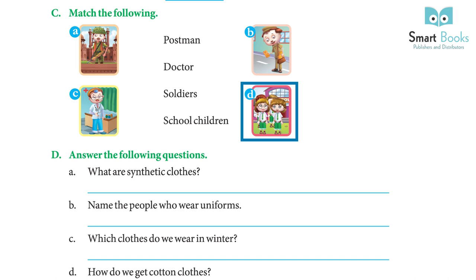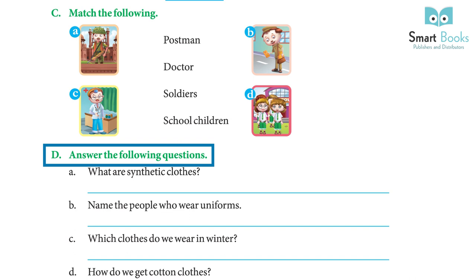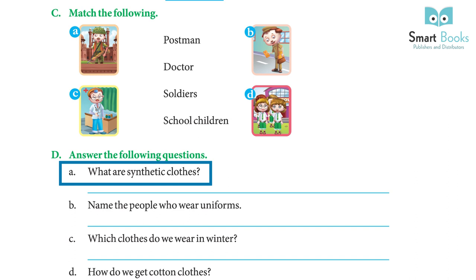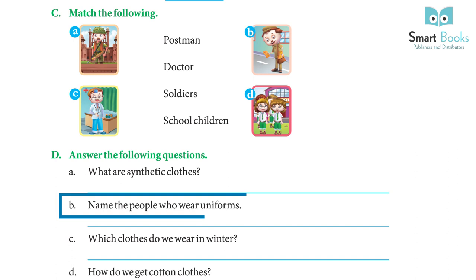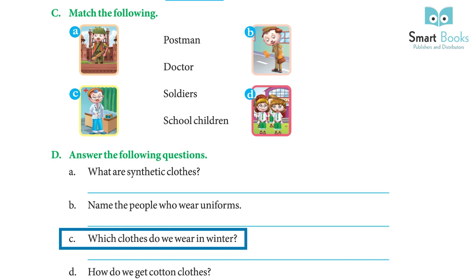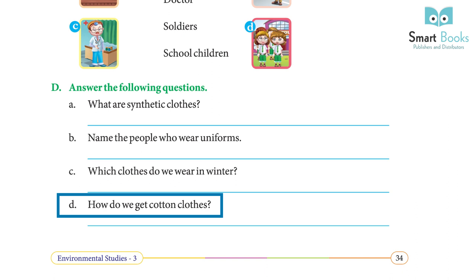Exercise D — Answer the following: a) Clothes made from artificial fibers like nylon, rayon, and polyester are called synthetic clothes. b) Uniforms are worn by school children, doctors, nurses, lawyers, policemen, and postmen. c) We wear woolen clothes in winter. d) Cotton is spun into yarn; the yarn is then used to make clothes on a loom.